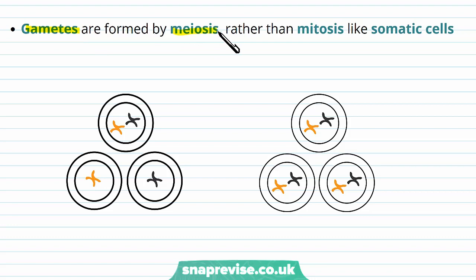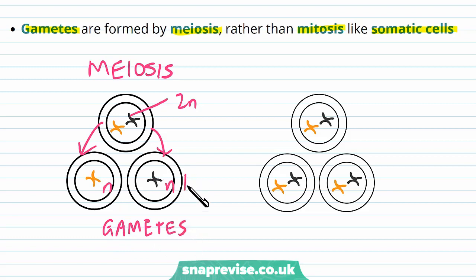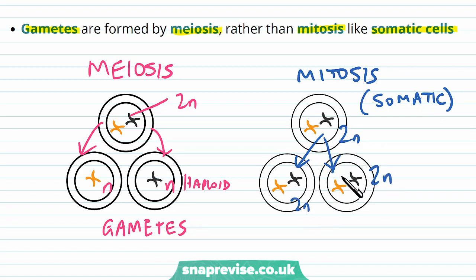Gamete cells are formed in a process called meiosis, and meiosis is different to mitosis, which involves somatic cells. In meiosis, a cell with a whole set of chromosomes (2N) will form gametes which each only have N, because the gametes have to be haploid. In contrast, in mitosis — which happens for every other type of cell in the body, i.e. somatic cells — the 2N produces two copies which both have 2N. So it just multiplies by 2, making two new cells with the same original contents.